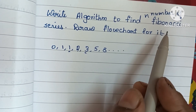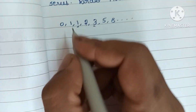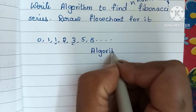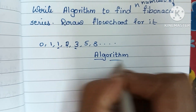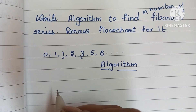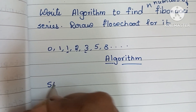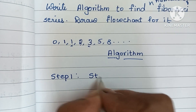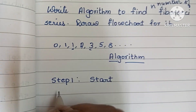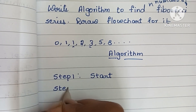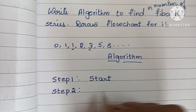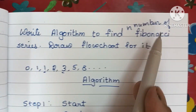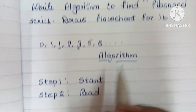We have to find N numbers of the Fibonacci series. An algorithm is a step-by-step process to solve a problem. Step one: an algorithm always starts with a start statement, so first we write the start statement. Step two: we have to read the value of N.